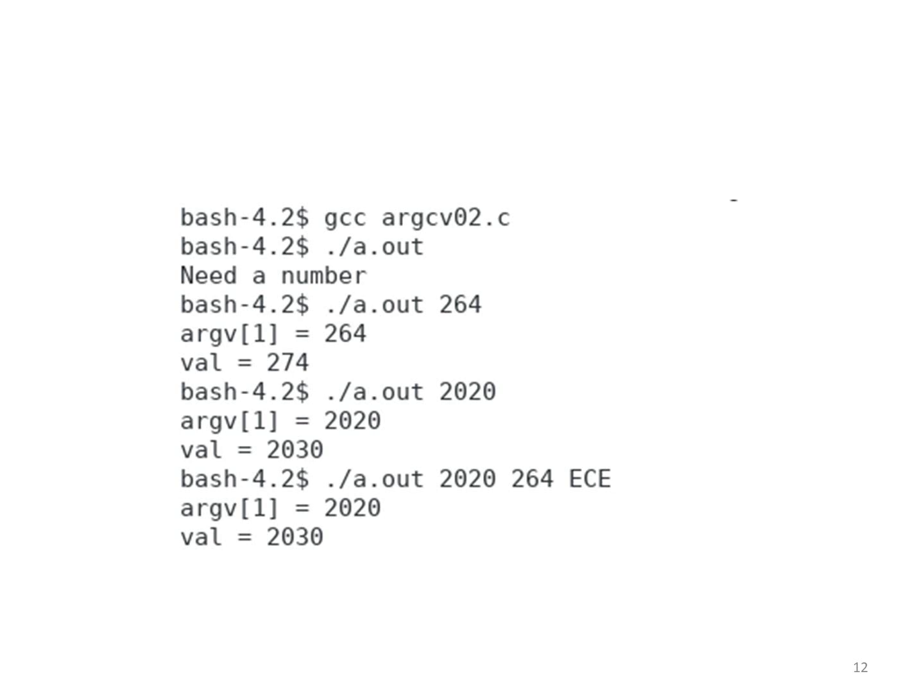If we run the program with argument 264, the program prints argv[1] as a string of 264. The string is converted to an integer and stored in val. The value increments by 10 and it becomes 274.